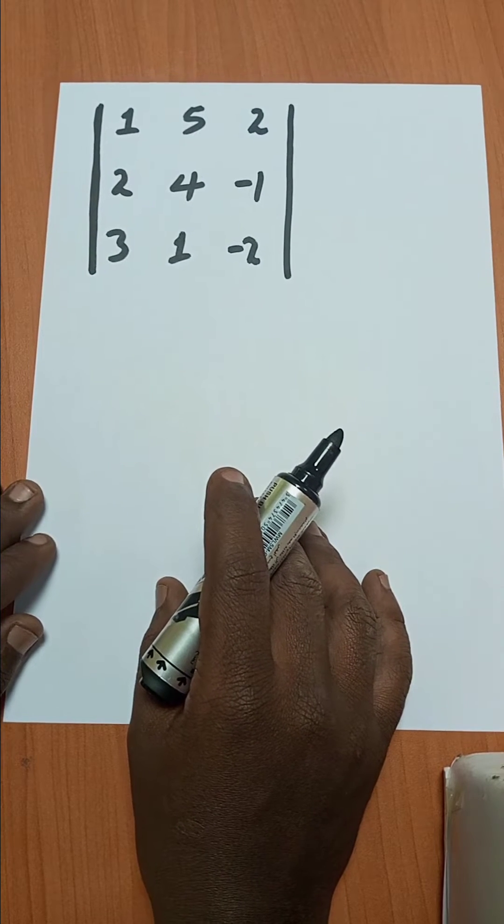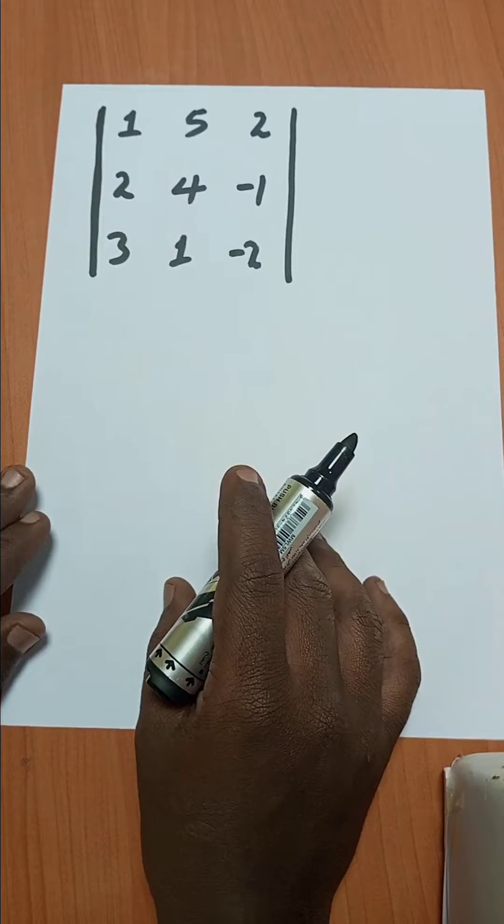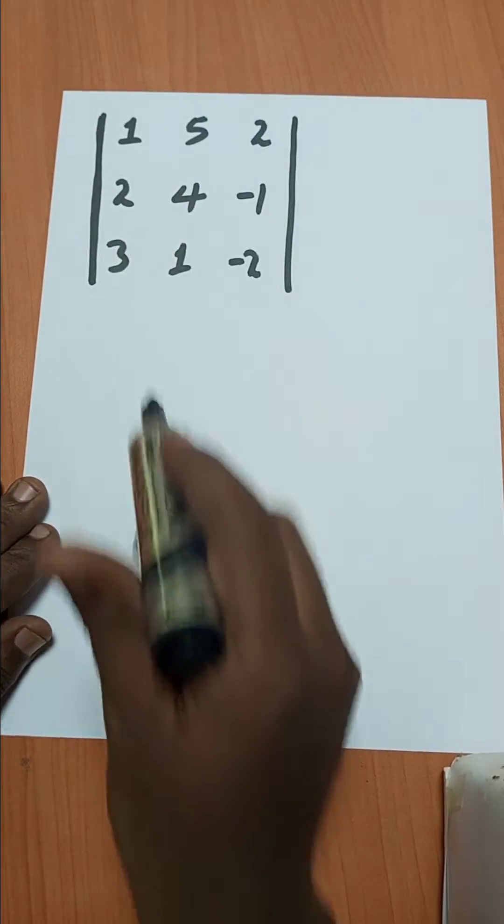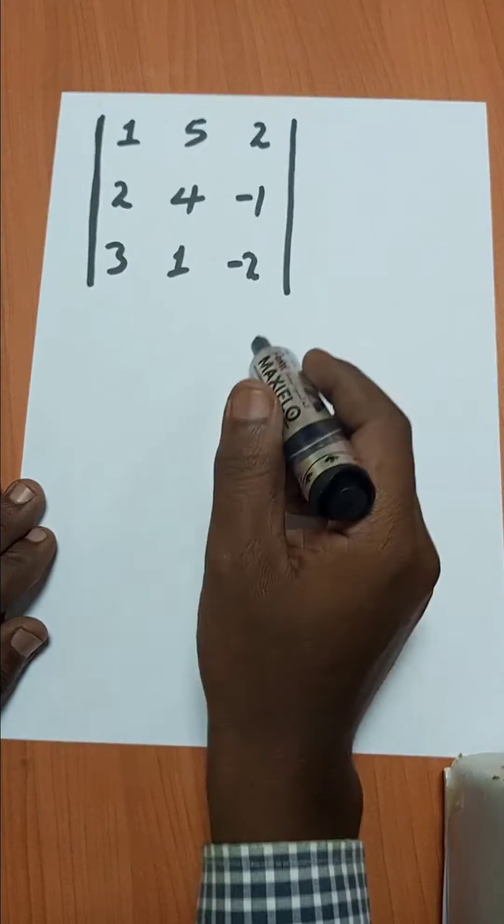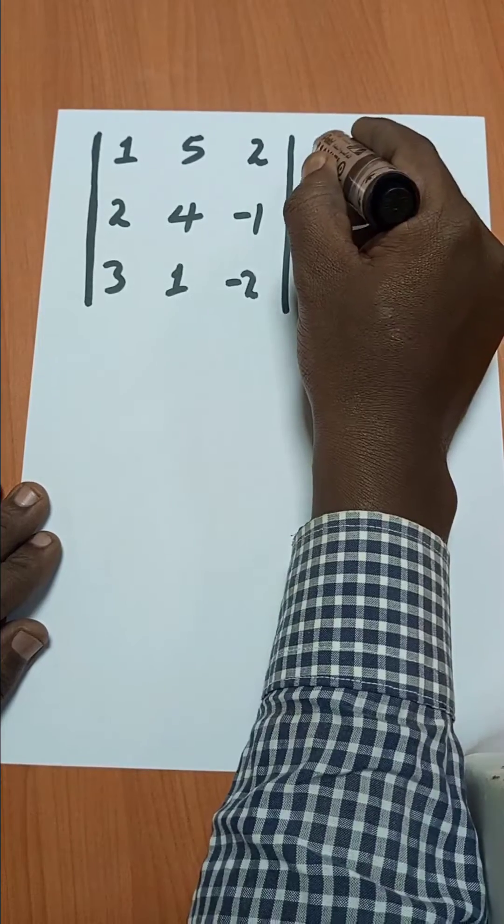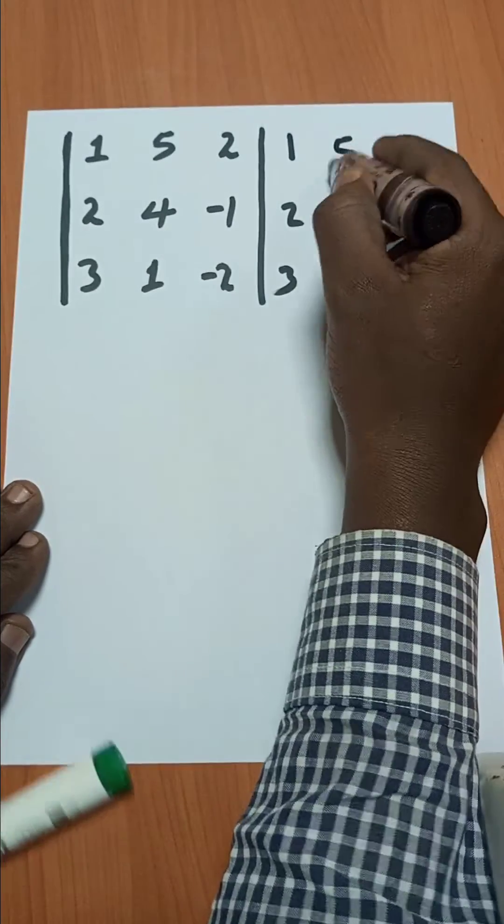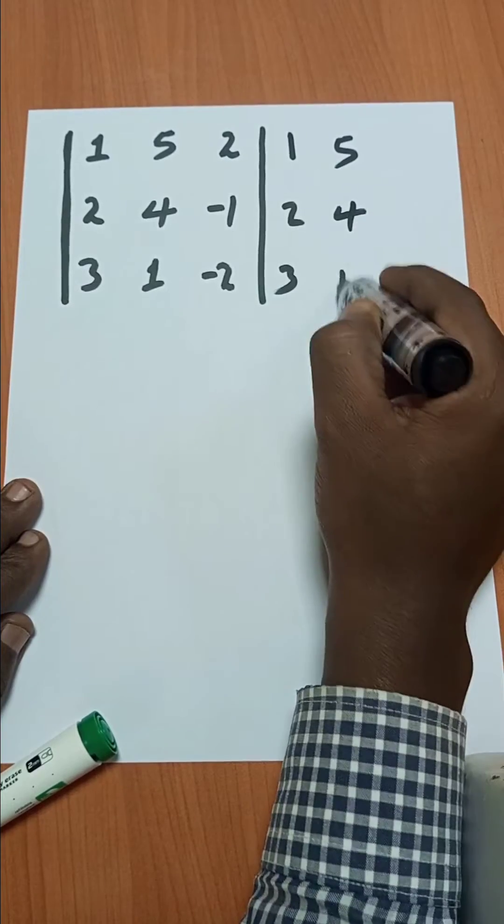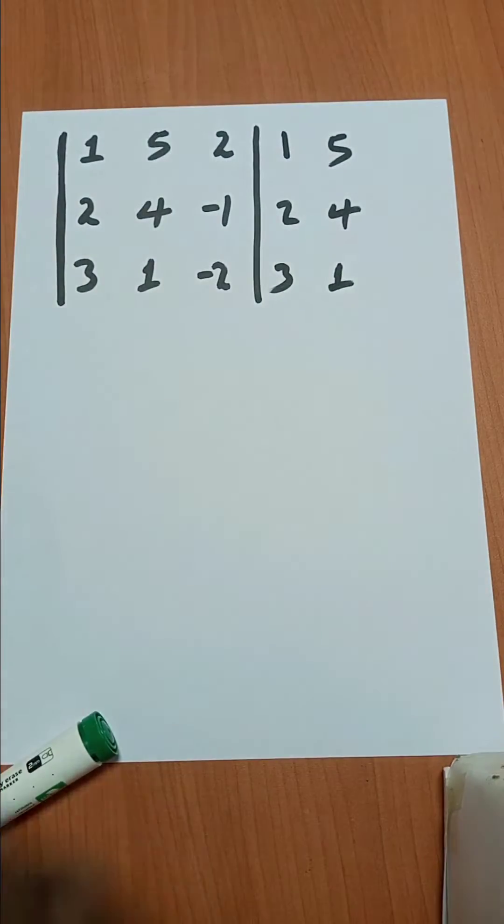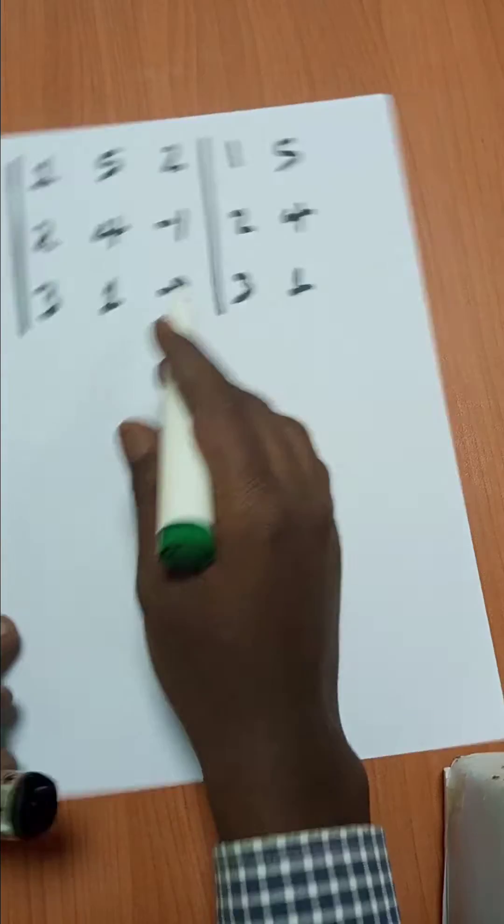The determinant of a three by three matrix. The way to do this is: take the first two columns and repeat them, which is one, two, three, five, four, one. Then take the product of the diagonals.